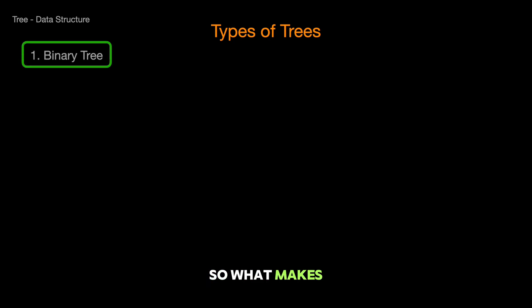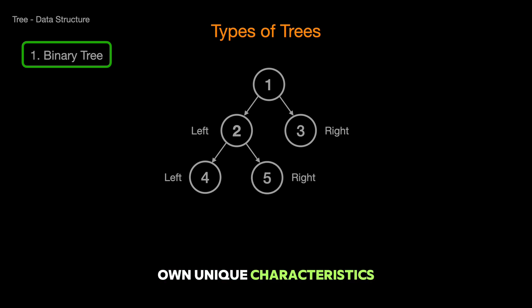So, what makes a binary tree special? It's all about the rule of two. Each parent node can have no more than two children. Simple, right? But wait, just like the natural world, binary trees come in various shapes and sizes, each with its own unique characteristics.